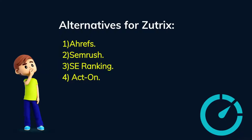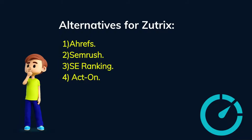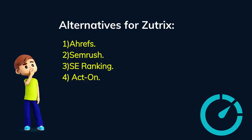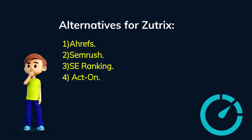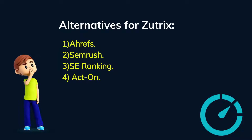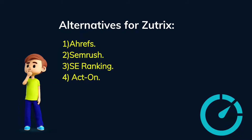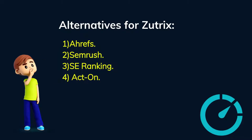Alternatives for Zootrix: First, Ahrefs. Second, SEMrush. Third, SE Ranking. Fourth, Acton.